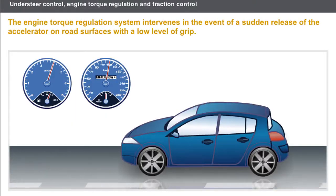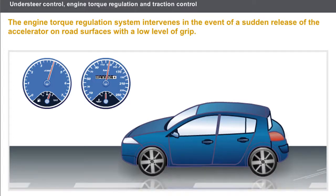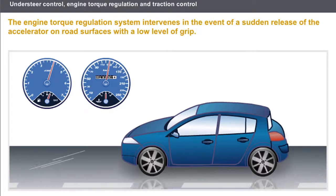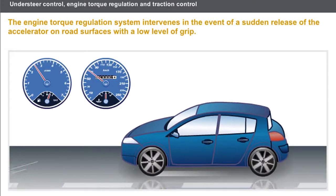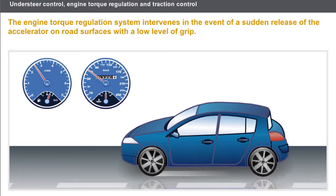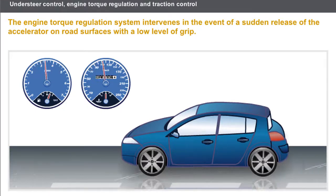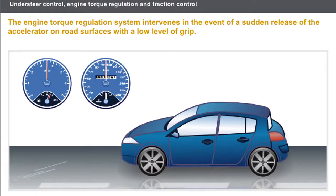The engine torque regulation system intervenes in the event of a sudden release of the accelerator on road surfaces with a low level of grip. The engine braking that occurs when the throttle is released becomes too strong compared to the amount of grip available. The engine torque regulation system limits this phenomenon by increasing the engine torque.